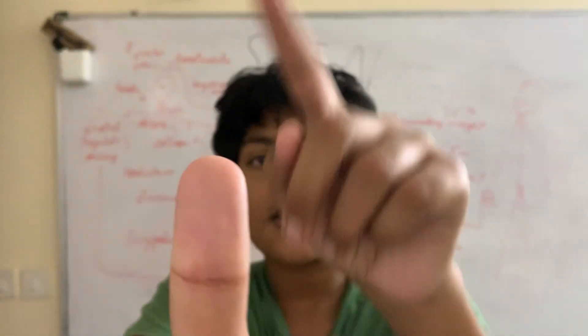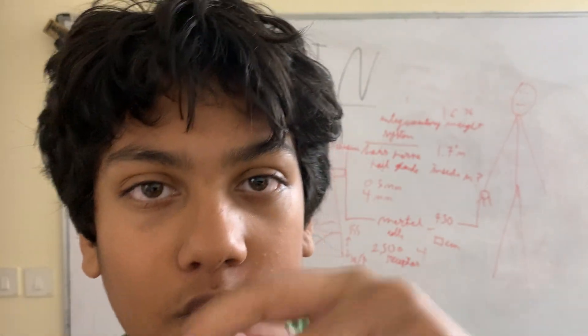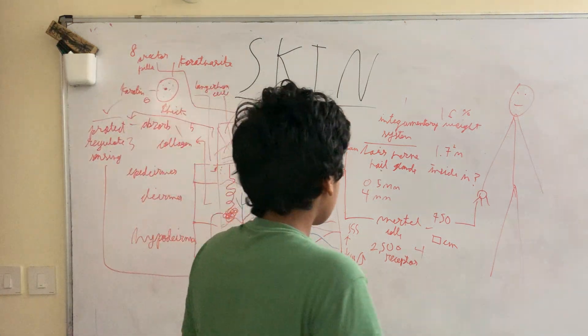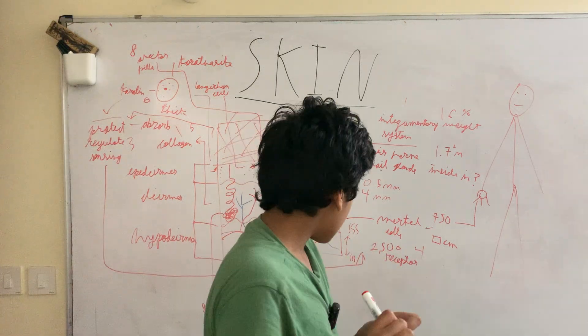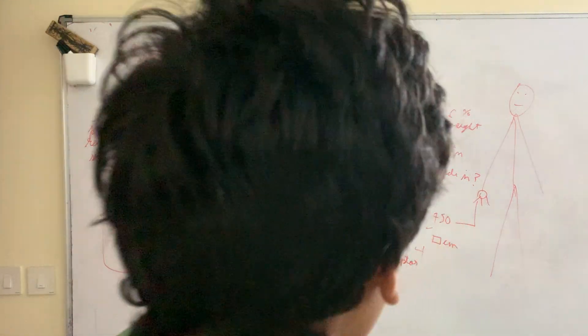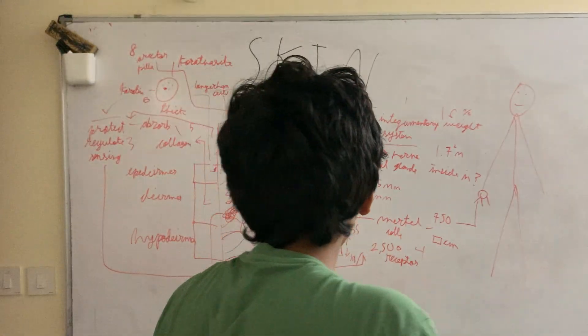Just to show how many Merkel cells there are: around 750 Merkel cells just in this thumb, and not only that, there can also be around 2,500 receptor nerve receptors also in this one thumb. Actually, only one square centimeter has that many Merkel cells.